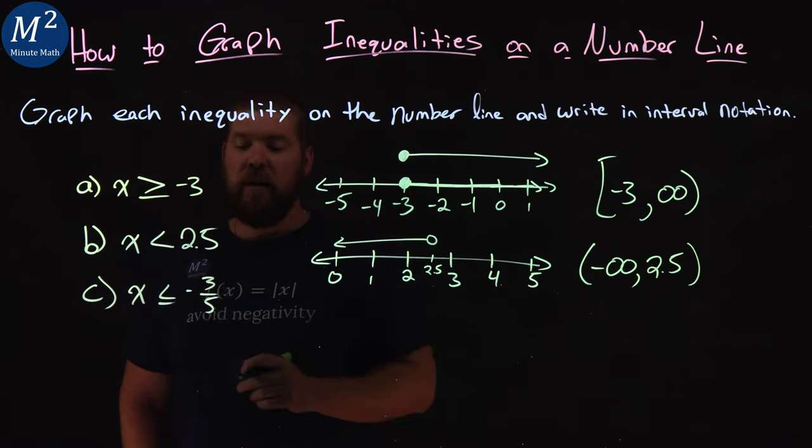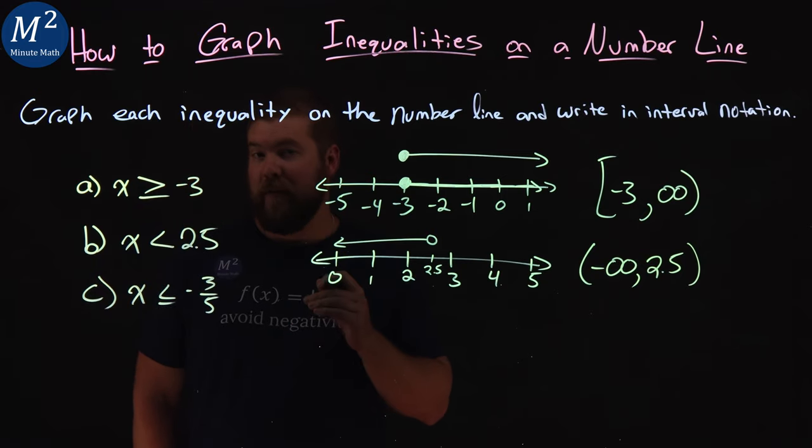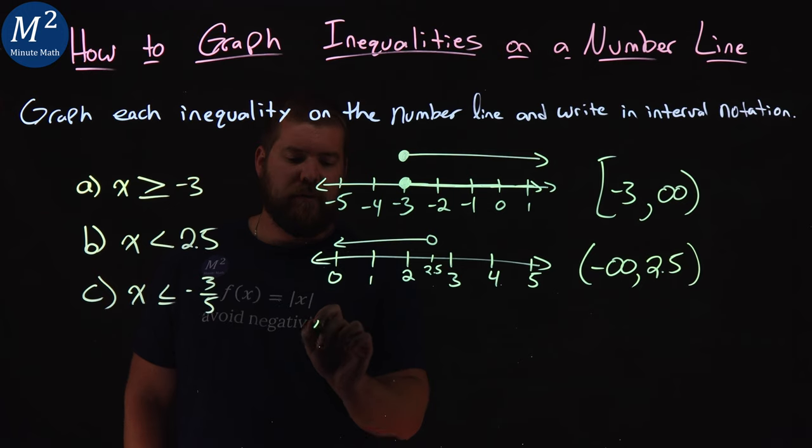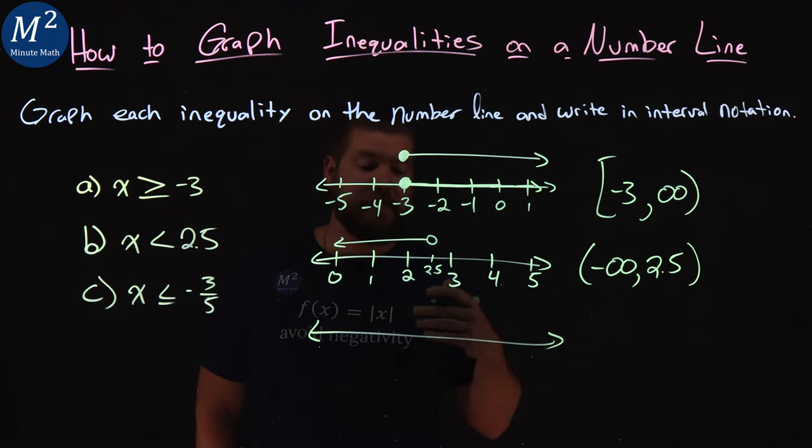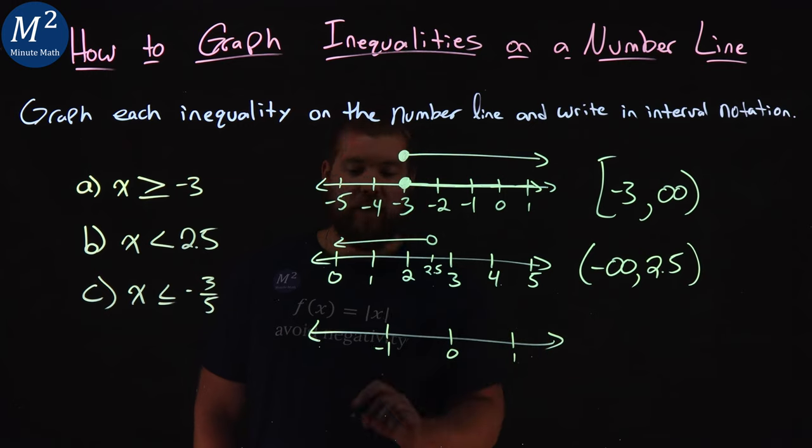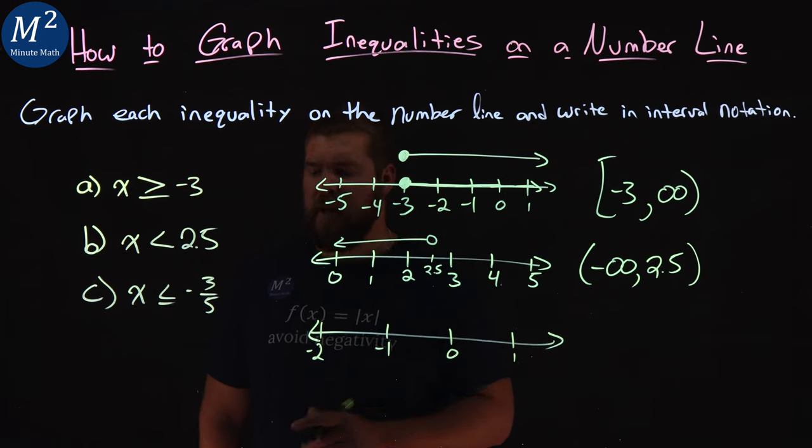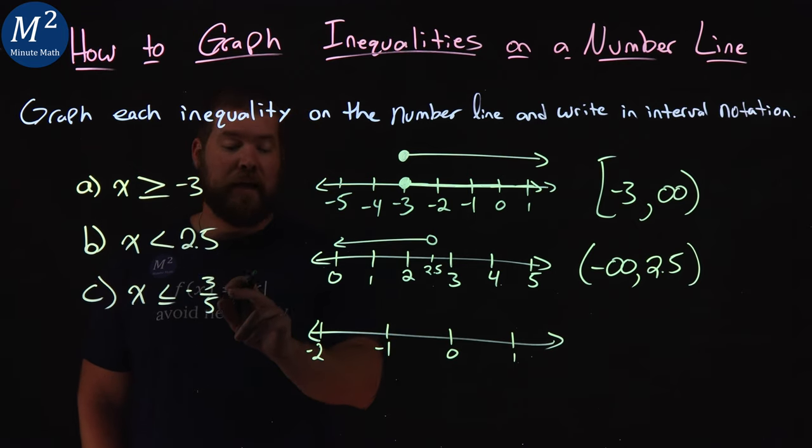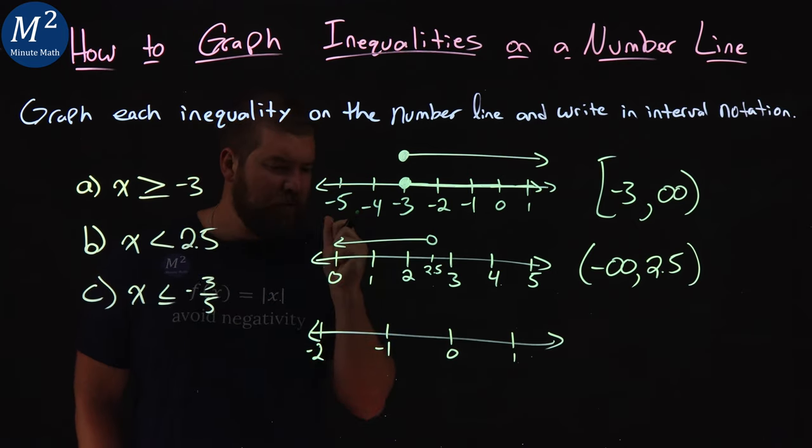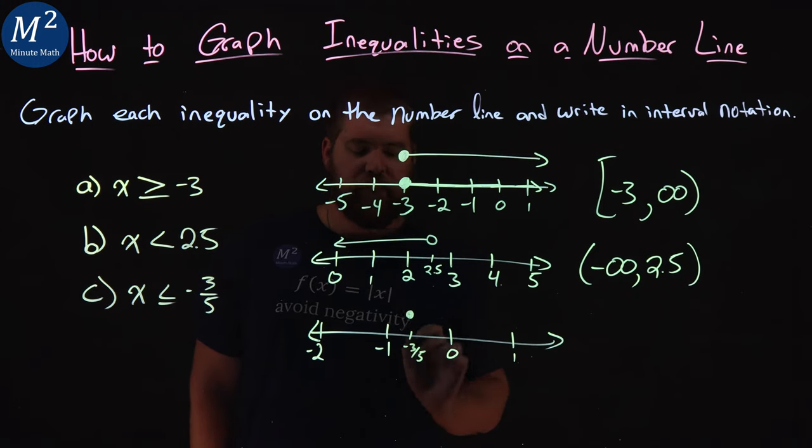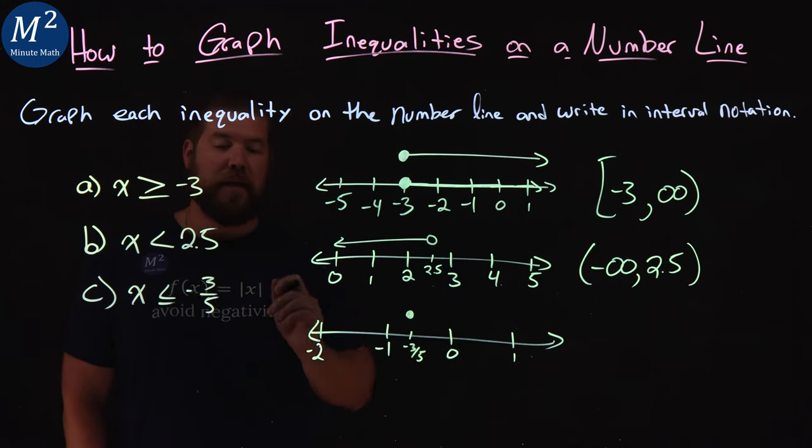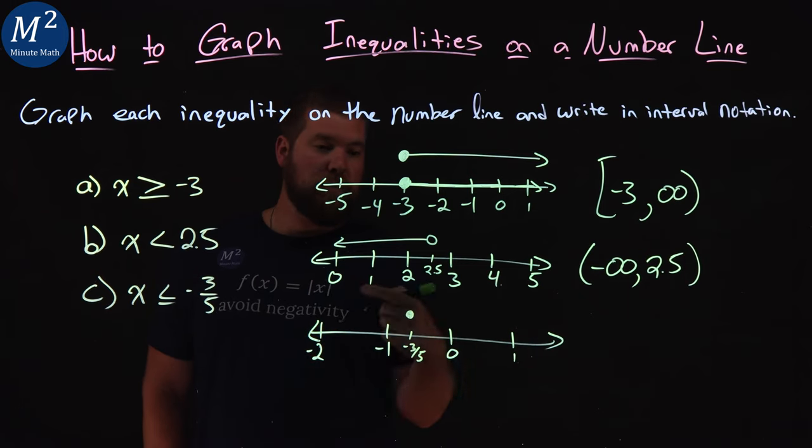Now lastly here we have x is less than or equal to negative 3 fifths. So what I'm going to do again is create a number line here, and negative 3 fifths is between negative 1 and 0. So I've put negative 1 here, put 0 here, put 1 there, and negative 2 right there. Now they say that x is less than or equal to negative 3 fifths. That equal to tells me we have a closed circle. So right around here is about negative 3 fifths. Let's put a dot here, and let's go mark it, negative 3 fifths. Now x is less than or equal to negative 3 fifths, which means we have to go to the left again.